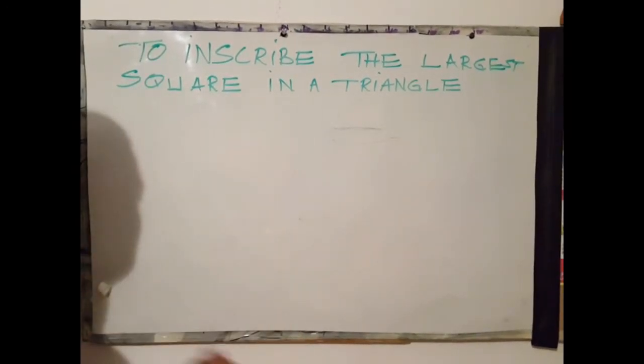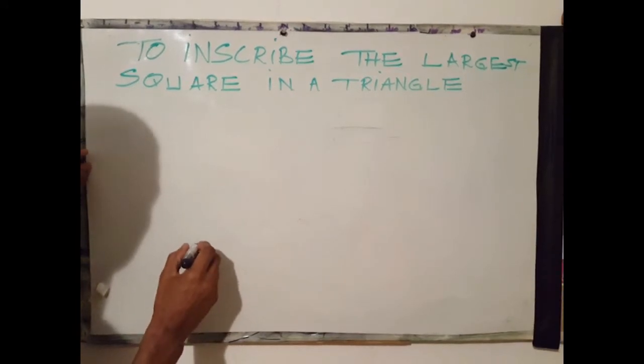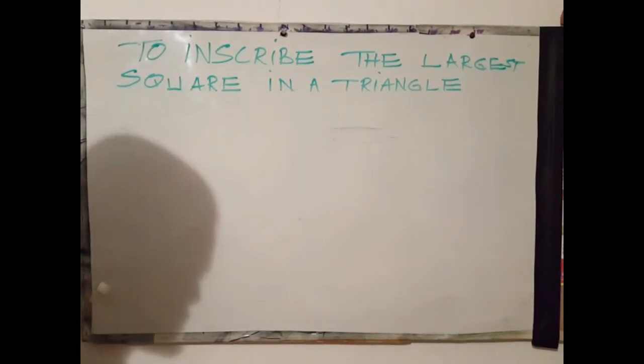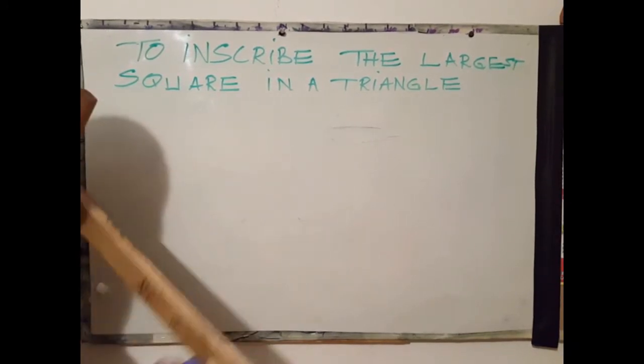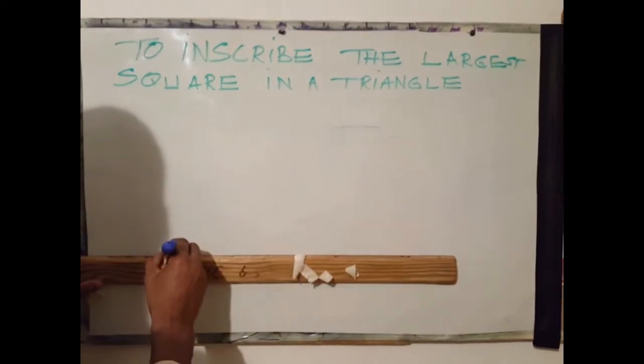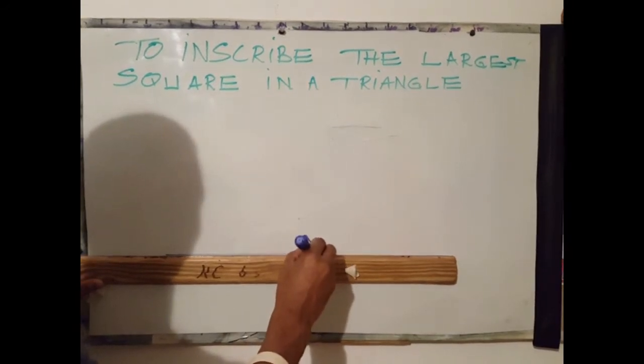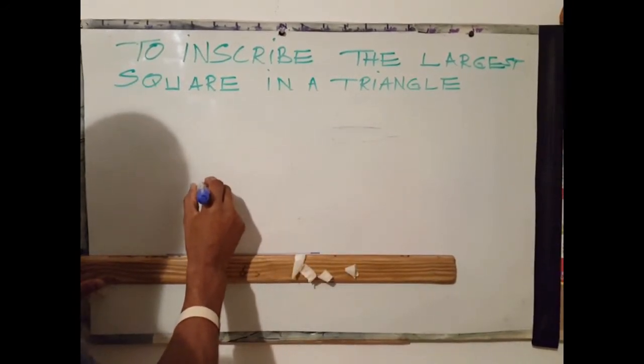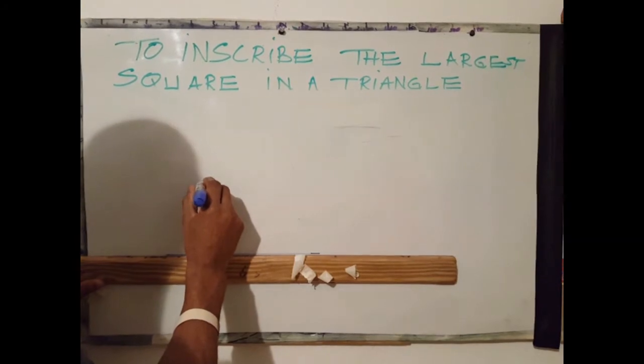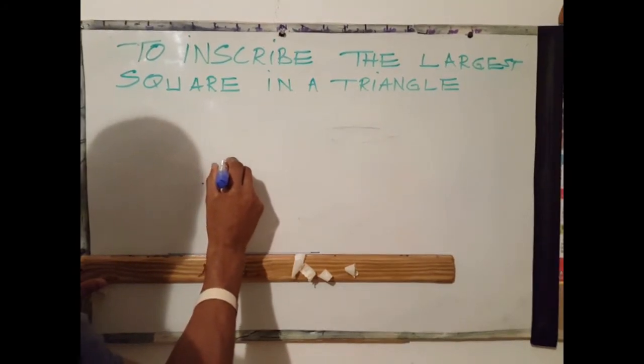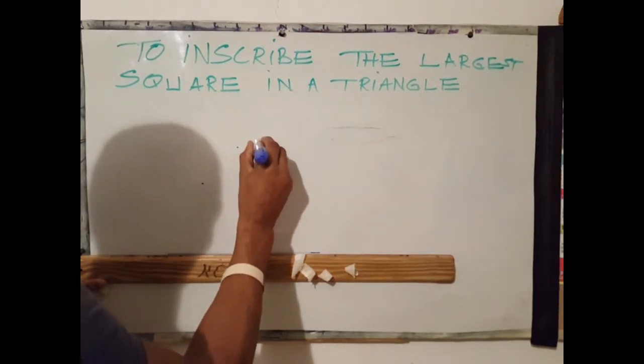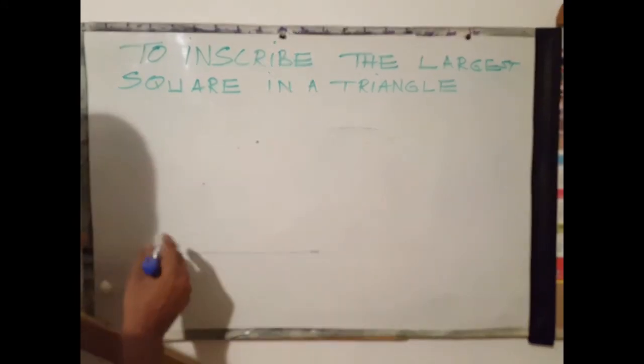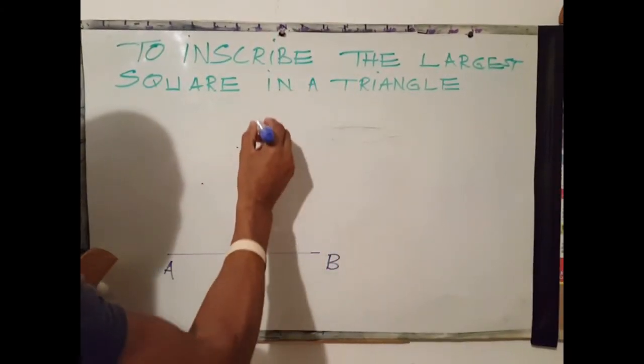The first step is to draw a random triangle. Draw any triangle. Now, this is my triangle. This is my base. Here is point C, here is point A, point B, point C.